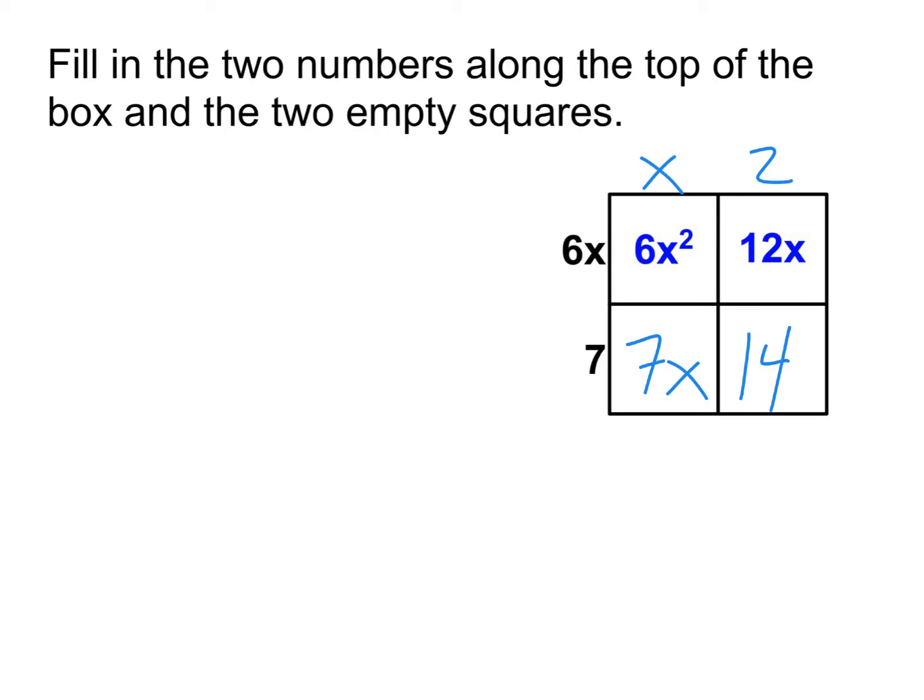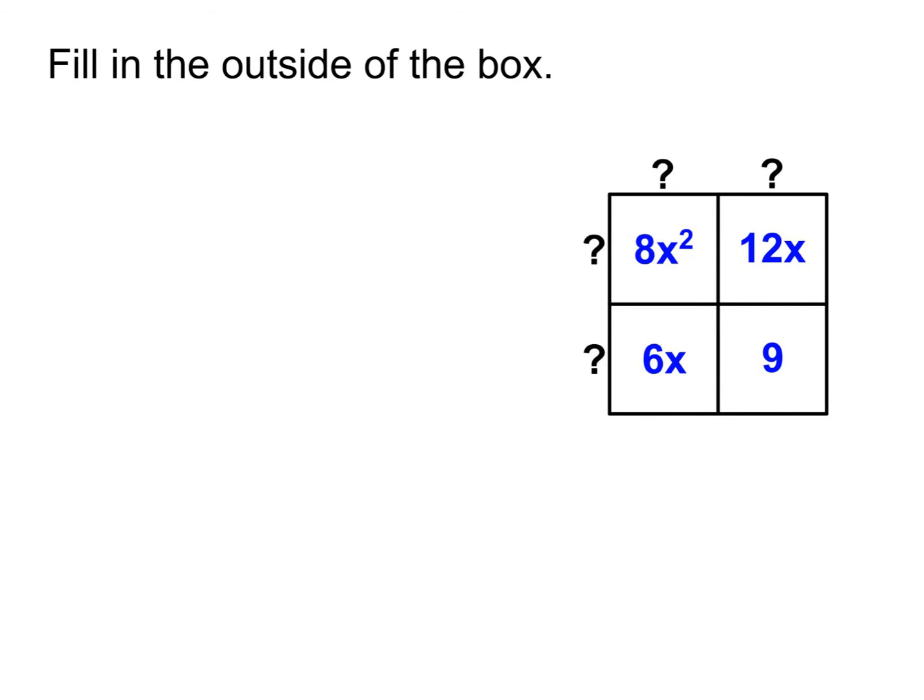But we can even take this entirely backwards. Here you have the box filled in. Please fill in what the outside along the left and the top will be that gives us that on the inside. So in order to fill those in, the easiest way I think about it is in terms of factoring. If I want to know what this number is out here, it's got to be something that multiplied into both 8x squared and 12x. So let's factor 8x squared and 12x. What can I divide both 8 and 12 by? 4. And I got an x squared and an x in both of them, so there must have been an x out here as well.